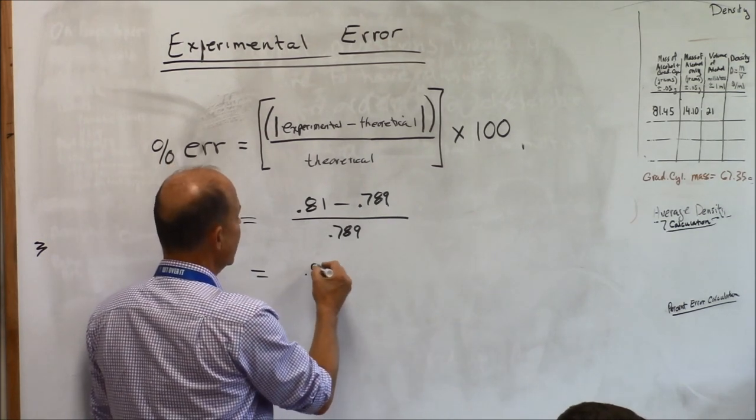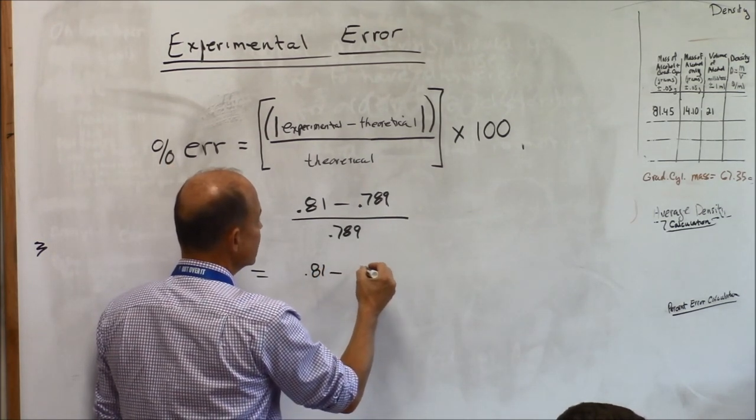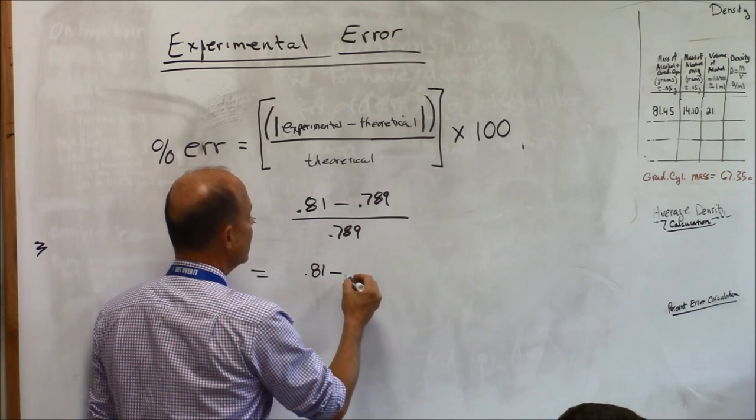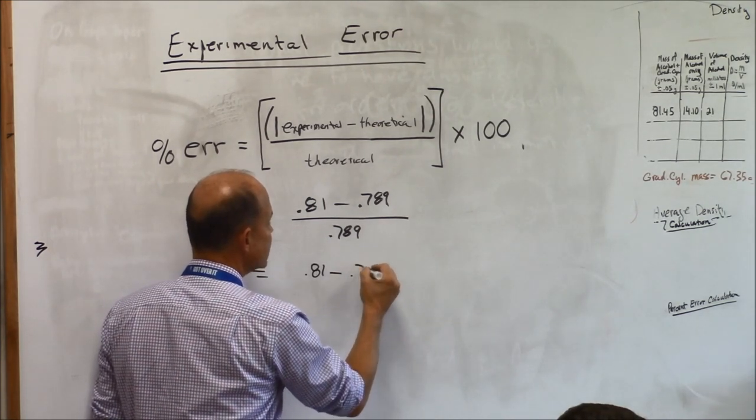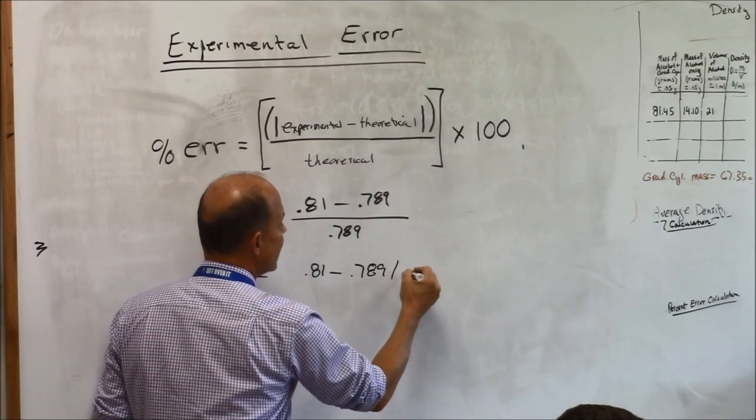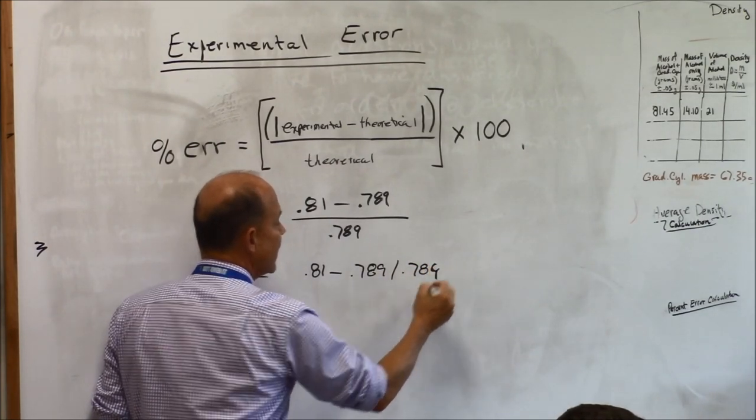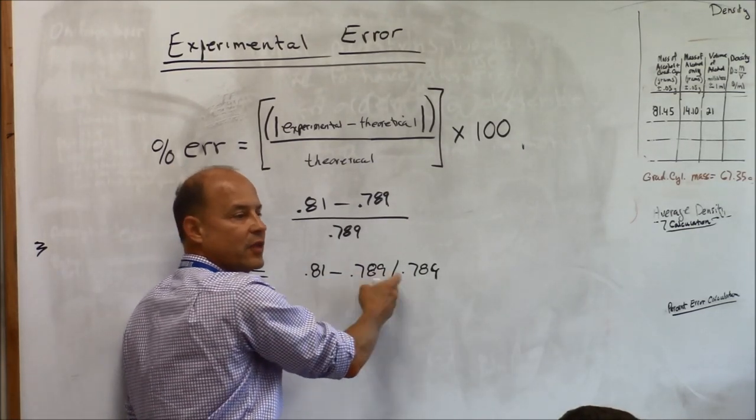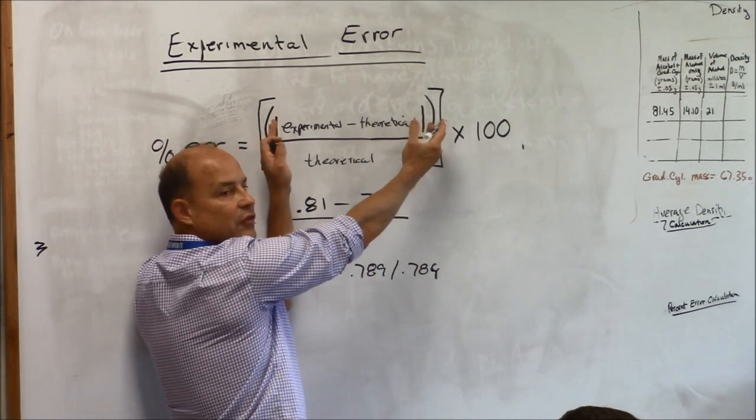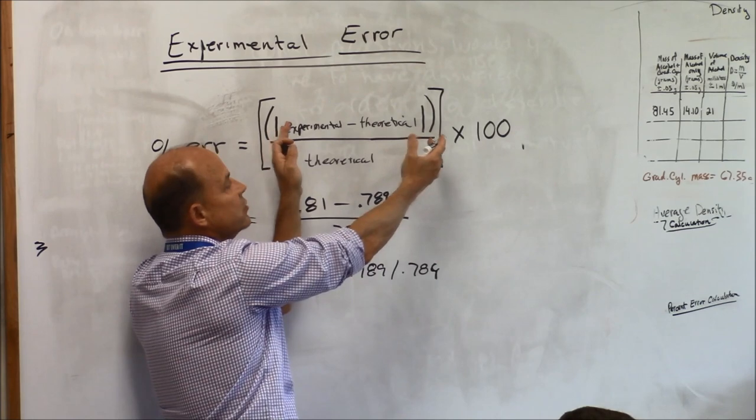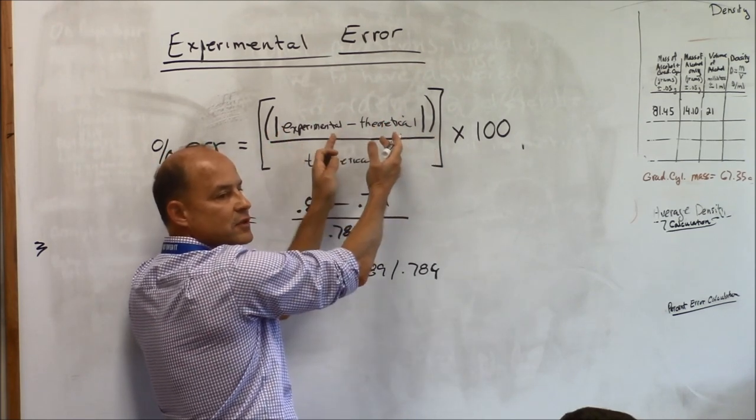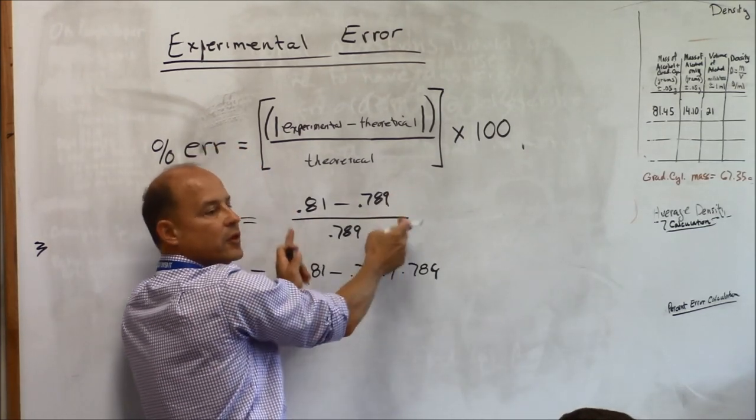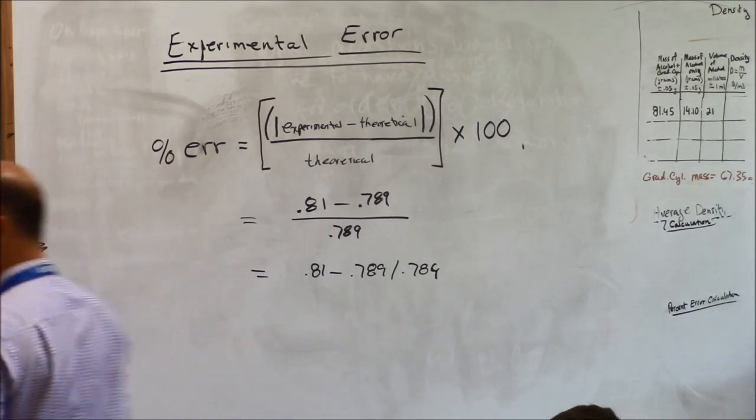Tyler, did you do point eight one minus point seven eight nine divided by point seven eight nine? And so order of operations said that it would do this first and it would subtract that from this. So that's why the parentheses are on top. Your math teacher will tell you do what's inside the innermost parentheses first and then work outward. So you're supposed to do essentially the numerator before you divide by the denominator.